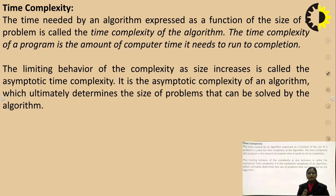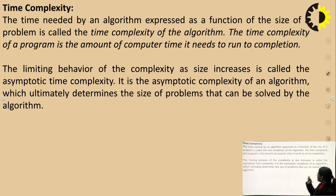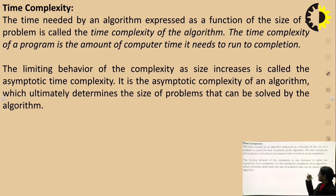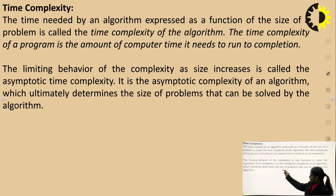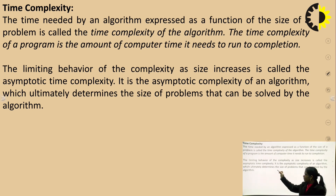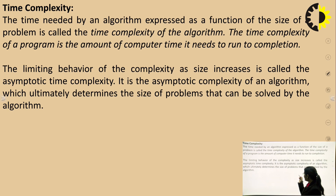Time complexity basically depends upon the number of inputs the user has provided. The time complexity of a program is the computer time it needs to run to completion. The limiting behavior of complexity as the size increases is called the asymptotic time complexity, which ultimately determines the size of problem that can be solved by the algorithm.